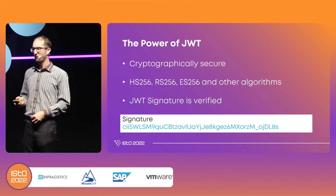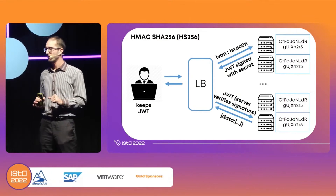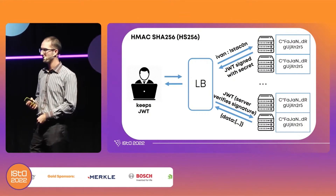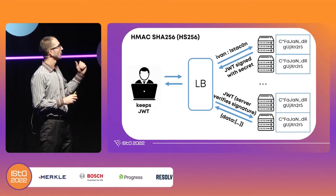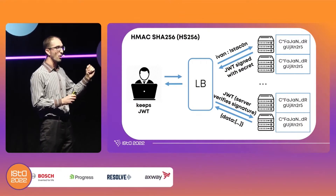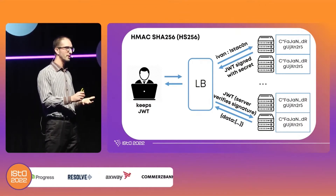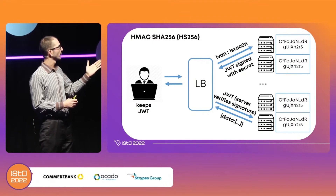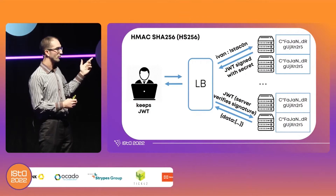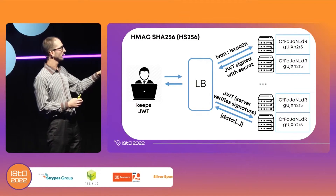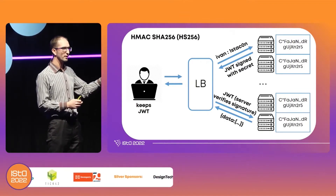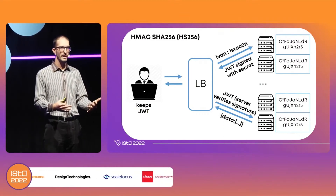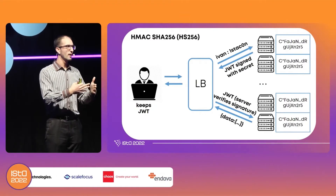Taking HMAC as an example: HMAC stands for Hash-based Message Authentication Code, which uses an internal hashing function — SHA-256 in this case. Ivan wants to log in; the servers have a special secret key hard-coded on each of them. The server issues tokens using that secret via the HMAC algorithm. Ivan submits credentials, gets back a JWT, stores it in the browser, and on every subsequent request sends the token. Each server knows the secret and can both sign and verify the message with the same secret.